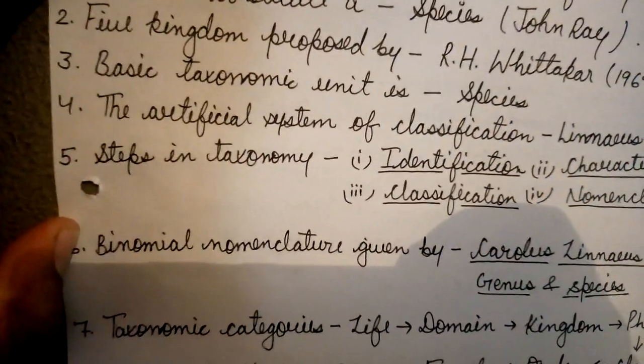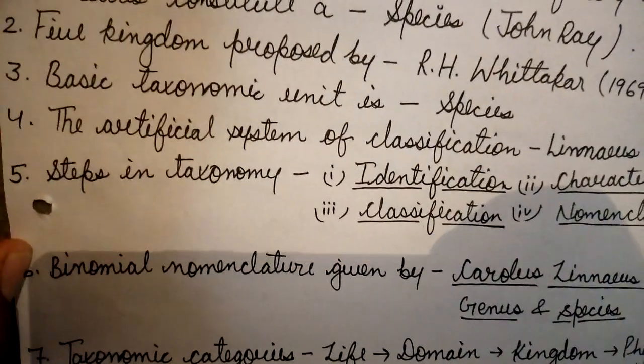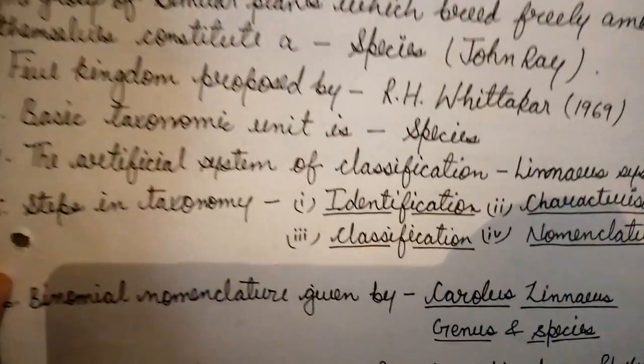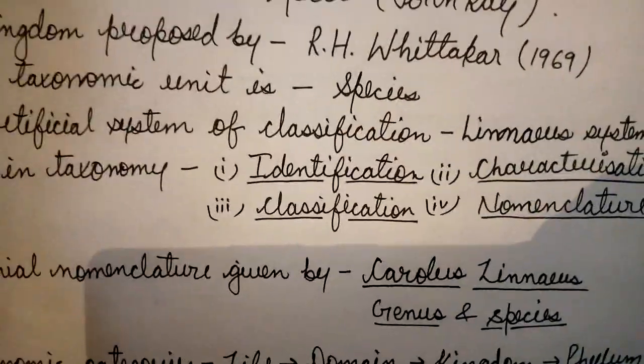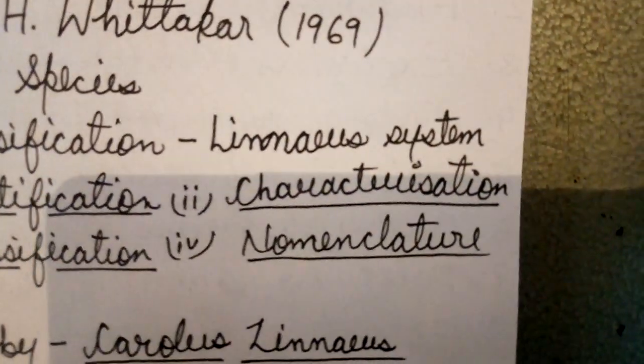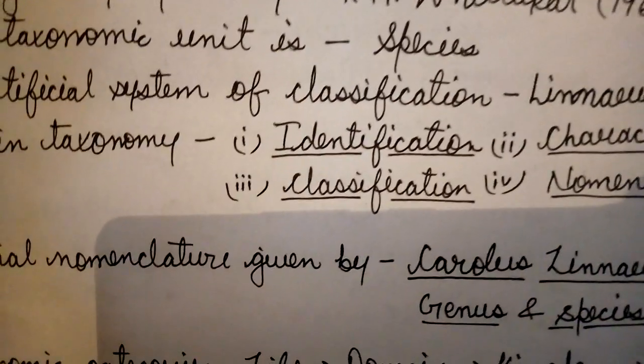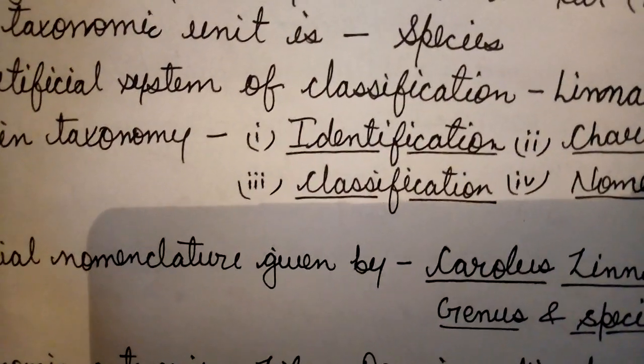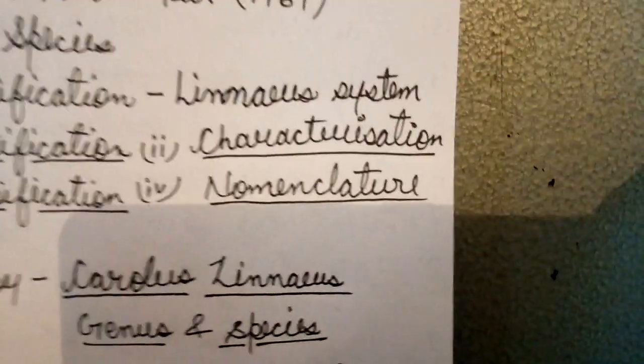If we talk about the steps of taxonomy, there are four steps in taxonomy: identification, characterization, classification, and nomenclature.